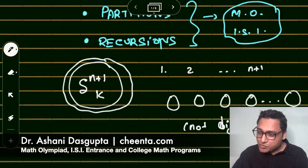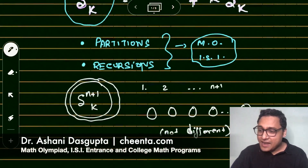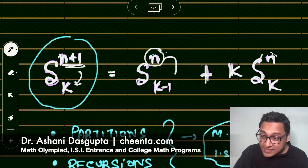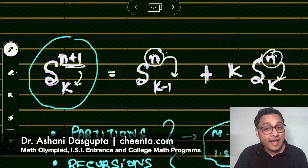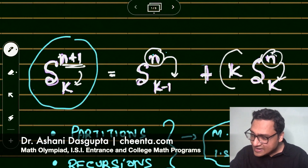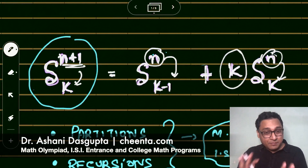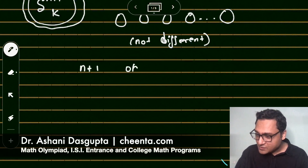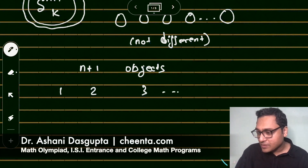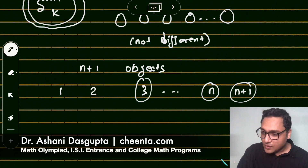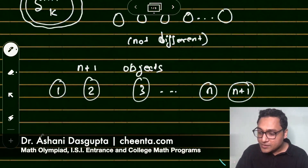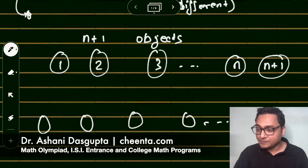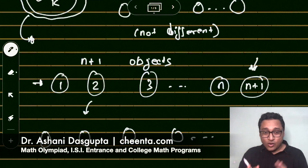I'll show you why this recursive formula works. You have n+1 objects being split into k bags. How is that related to splitting n objects into k-1 bags, and splitting n objects into k bags? Let's call the objects 1, 2, 3, 4, up to n+1. We want to put them into k bags — that's what S(n+1, k) is all about. Let's focus on the (n+1)th object.